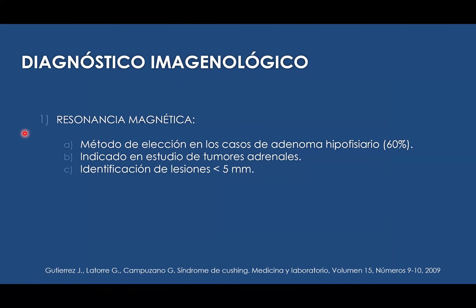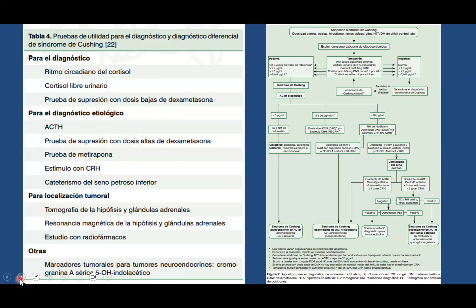El diagnóstico imaginológico para todo paciente con sospecha de enfermedad de Cushing requiere resonancia magnética. Solicitamos resonancia magnética de hipófisis con contraste para hacer diagnóstico de adenoma hipofisiario en cerca del 60% de pacientes. También hay que considerar que la resonancia sirve para tumores adrenales, en los cuales podemos identificar lesiones menores de 5 milímetros aproximadamente. Las pruebas que se realizan para el diagnóstico etiológico y para la localización tumoral están resumidas en cuadros previamente conversados.